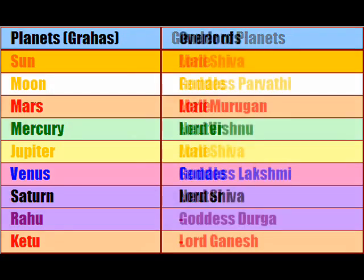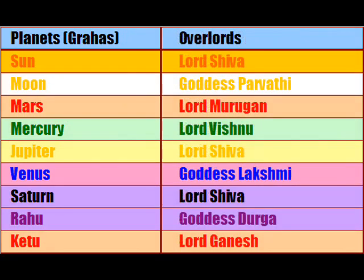The next chart states the overlords of the respective planetary lords. When you are performing remedies for the planets, it is good to do so for both the planetary lords and their respective overlords.